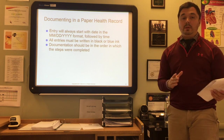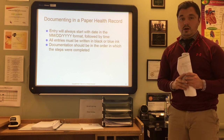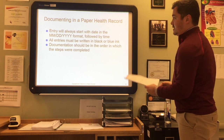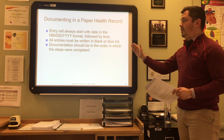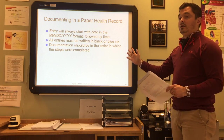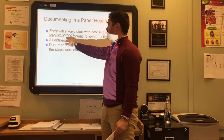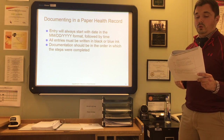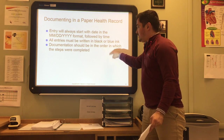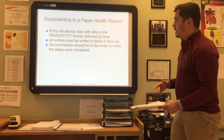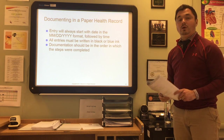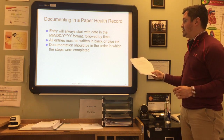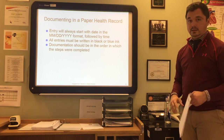Documenting in the paper medical record is a little different — you have to actually write in it. The entry will always start with a date in the MM/DD/YYYY format, for example 10/26/2016, followed by the time. If military time is used, it is in four-digit format with a colon, such as 14:00. All entries must be written in black or blue ink — never use pink, green, or red. Documentation should be in the order in which the steps were completed.